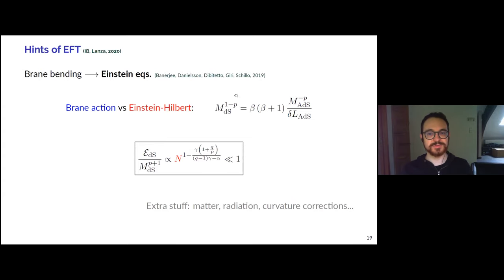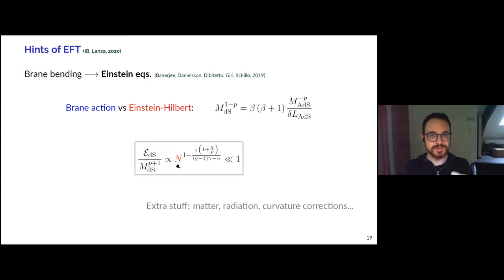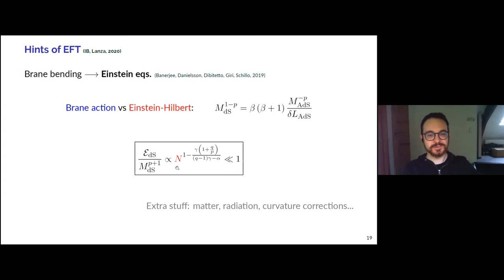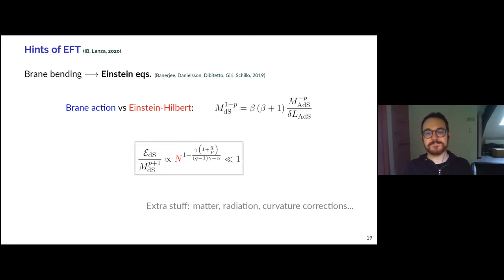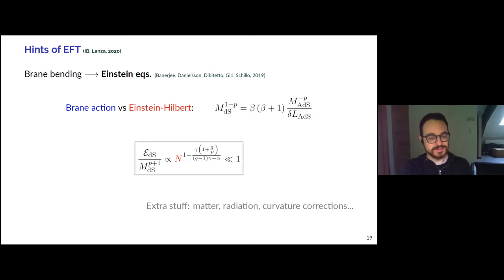Not only does the ADS bulk appear controlled for large n, but also the de Sitter brane world appears to be under control. Going further, the ratio of the Planck mass to the de Sitter energy density is a negative power of n — for the same combination of coefficients that gave us the no-go theorem for de Sitter compactifications and the repulsion of extremal branes. Everything appears to be connected. One can also add extra ingredients to this scenario: matter through clouds of strings attached to the branes, radiation encoded by black holes in the bulk, and one can explore how bulk gravity affects the gravity on the brane world.